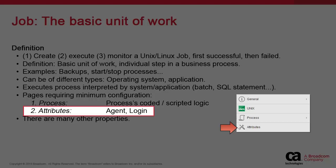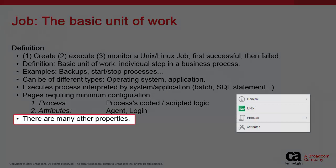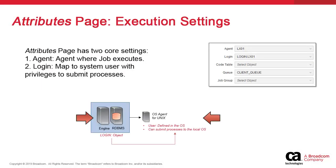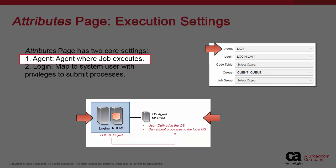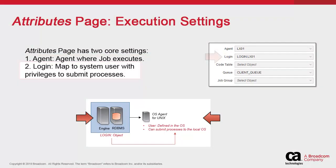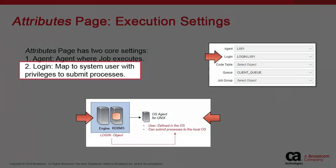The attributes page also includes the login object, which identifies the user credentials under which the job runs. It also has optional properties like a queue, variables, pre and post processing, and other aspects. The attributes page contains two important fields: the agents where the job is submitted at execution, and the login object, which makes it possible for the job to execute with the appropriate privileges. The login object is mapped to a system user.